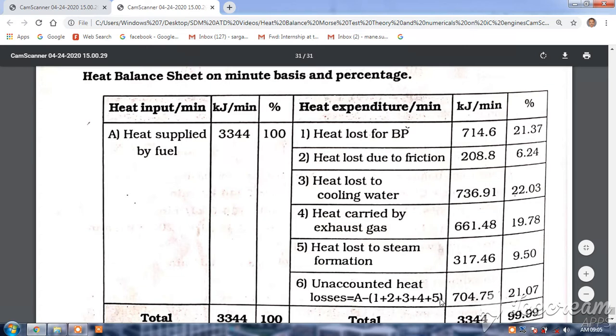How you get percentage: 714 divided by 3344 × 100 = 21%. Similarly, 208 divided by 3344 × 100 = 6.24%. This is how we calculate all heat balance percentages. The heat should be balanced - whatever is supplied on the left side equals the total expenditure.